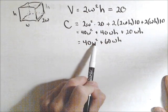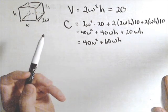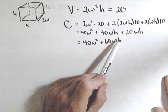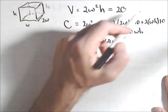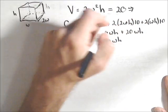Now we have a cost function, but it's in terms of two variables. So what we need to do is get rid of one of them. Probably the easier one to get rid of will be the h.